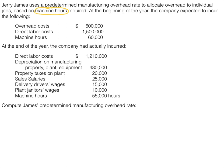At the beginning of the year the company expected — which is the same thing as estimated — to incur the following. At the end of the year the company had actually incurred, so this is what actually happened. The first thing we want to do is to compute our overhead rate. Remember that we take estimated overhead divided by estimated allocation base. So we're going to take our estimated overhead of $600,000 and divide that by our estimated allocation base — machine hours — which is 60,000 machine hours. Our rate then is $10 per machine hour.